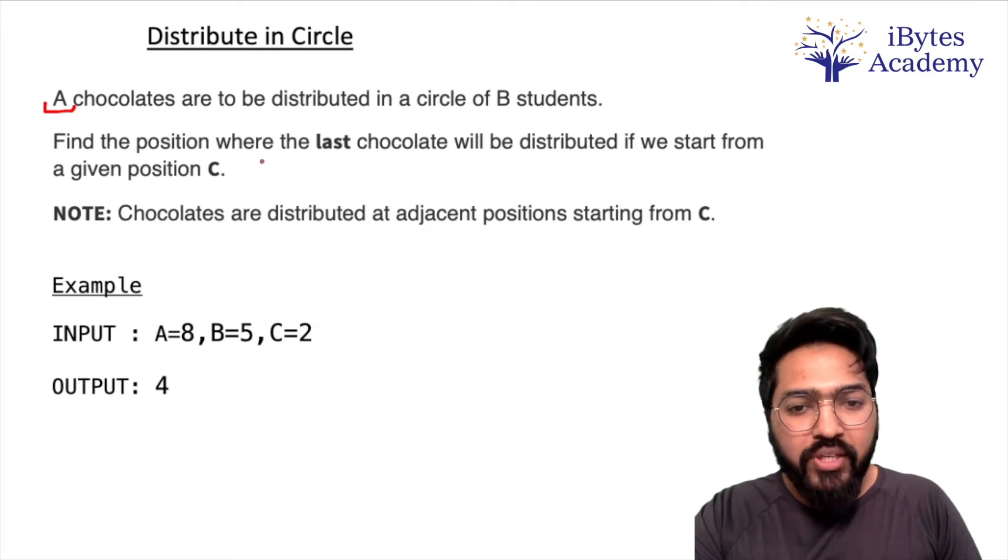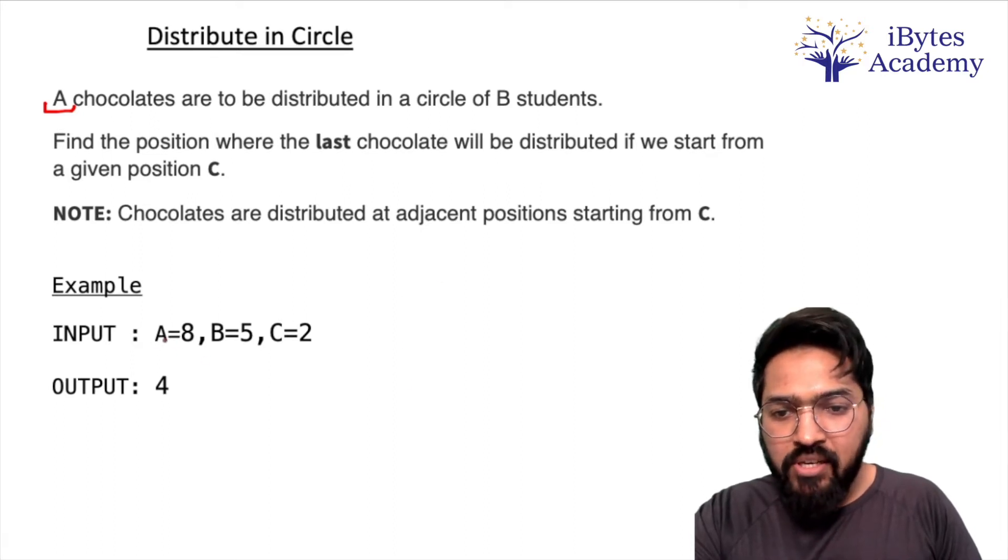Chocolates are distributed at adjacent positions starting from C. Let's try to understand with the help of an example. If A equals 8, B equals 5, C equals 2, so A is number of chocolates, B is number of students, and C is starting position.